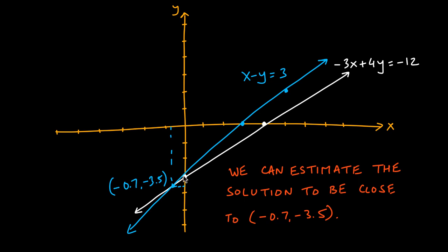From the graph we can see the two lines intersect somewhere around negative 0.7, negative 3.5. We can estimate that as the solution to the system, but because we're drawing by hand, we can only get into a ballpark — not an exact answer. That's why graphing is limited, and if we need exact answers we need an algebraic approach.